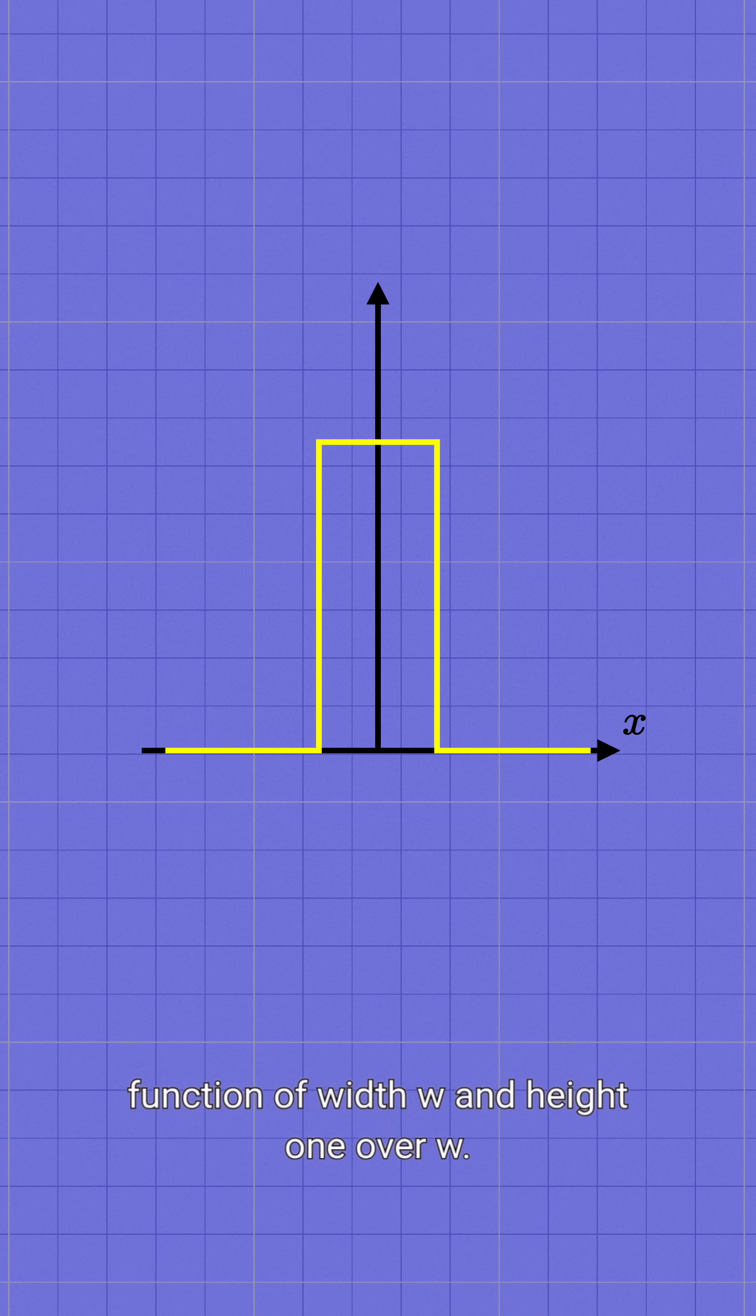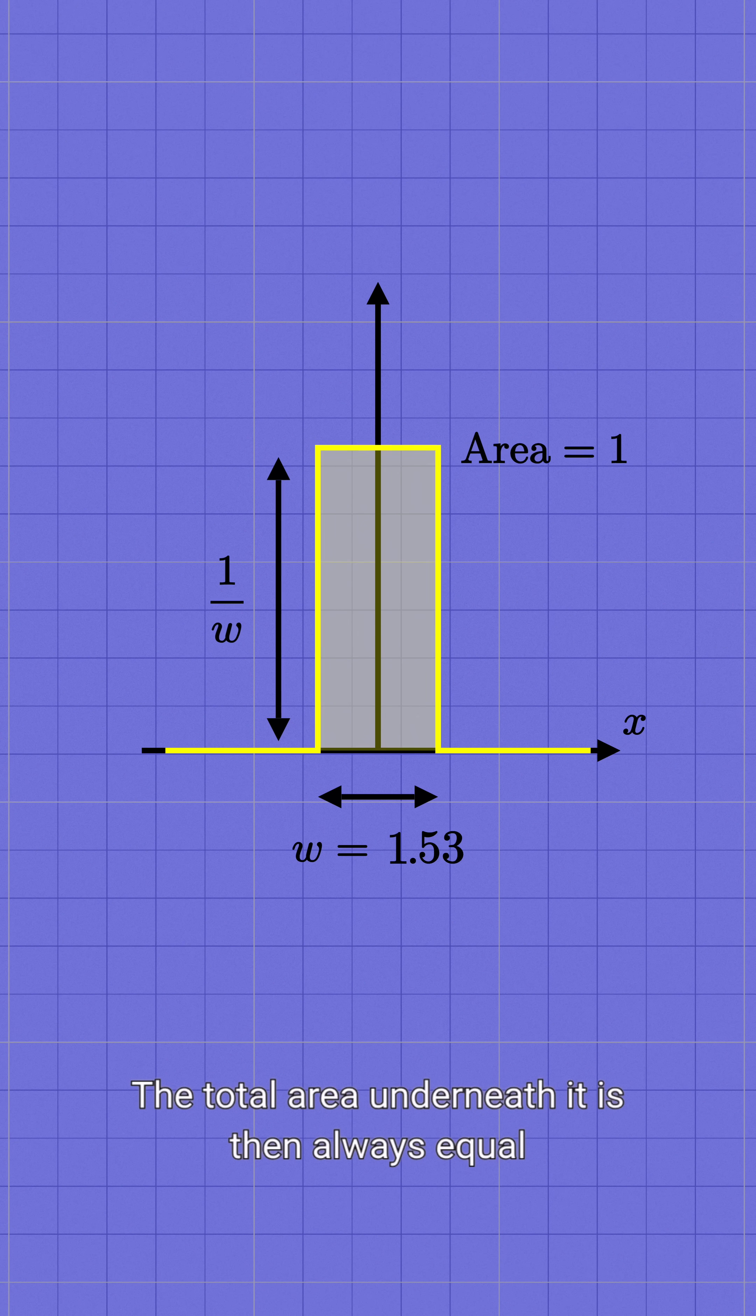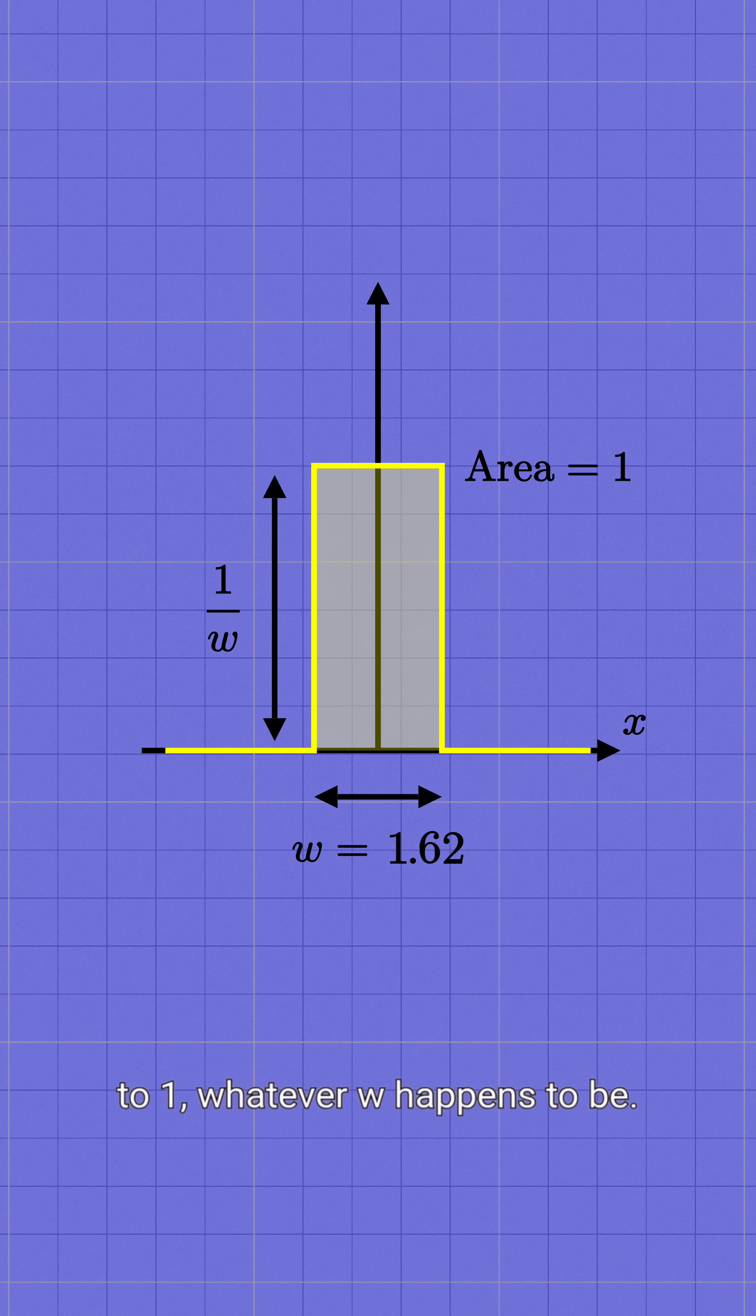Picture a simple rectangular function of width w and height 1 over w. The total area underneath it is then always equal to 1, whatever w happens to be.